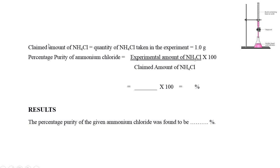Now the calculation for the amount of NH4Cl: the claimed amount of NH4Cl is equal to the quantity taken in the experiment which is 1 gram. The percent purity of NH4Cl is equal to the experimental amount of NH4Cl divided by the claimed amount of NH4Cl times 100.